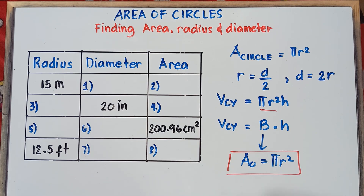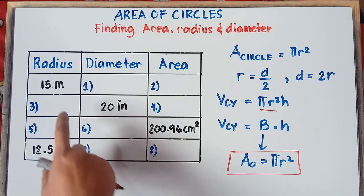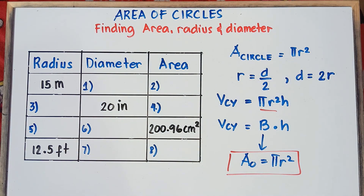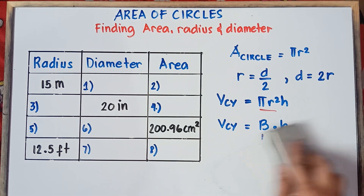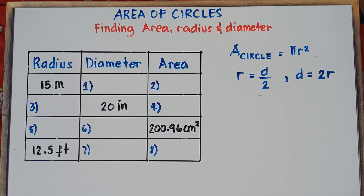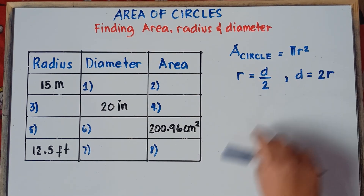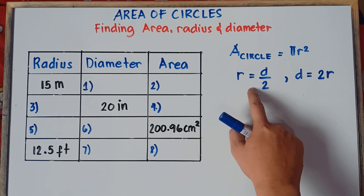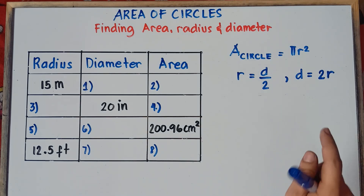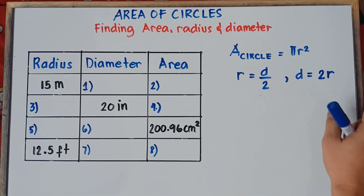So if you understand this, we'll be answering: finding the diameter, the radius, and the area of the circle. To find the area of the circle, the formula is pi r squared. To find the radius, that would be r equals diameter divided by 2. And to find the diameter, that would be d equals 2 times the radius.